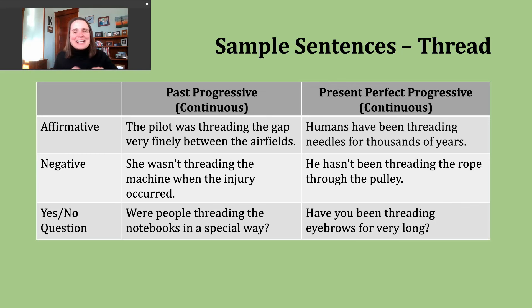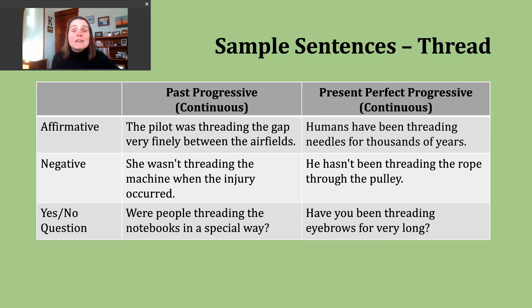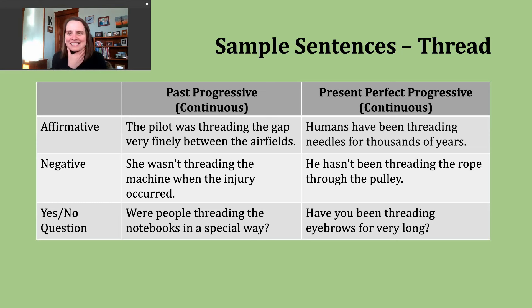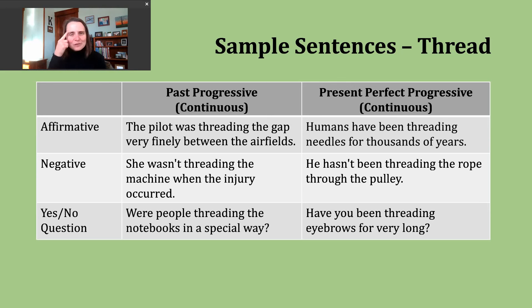To make a yes or no question in the present perfect progressive, start with have or has, use the matching subject, then the participle been and the ing form of the verb. Example: have you been threading eyebrows for very long? This might be a question you ask before having this process done. I think about that many times — I don't want someone who is brand new at eyebrow threading or waxing; I'd like them to have a little bit of practice first.